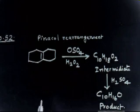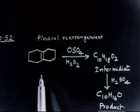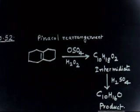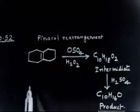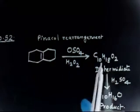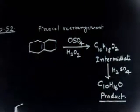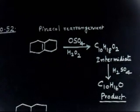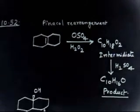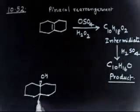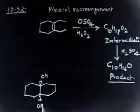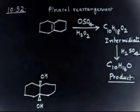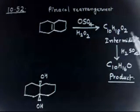OsO4 and H2O2, that is a syn hydroxylation. The first part is easy. If you treat this compound with this, you will have two OH groups that are attached and both should be cis side. You will have one OH here and another OH here. This is a syn hydroxylation.